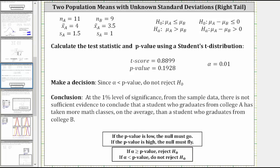Which means at the 1% level of significance from the sample data, there is not sufficient evidence to conclude that a student who graduates from college A has taken more math classes on average than a student who graduates from college B. I hope you found this helpful.